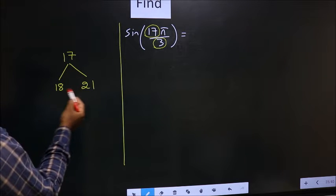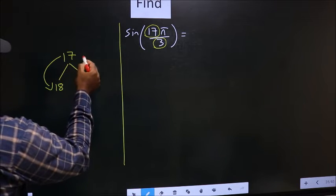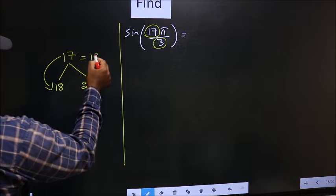17 is close to which multiple? It is close to 18. So we should write 17 to be 18 minus 1.